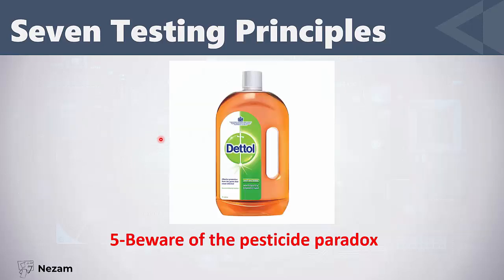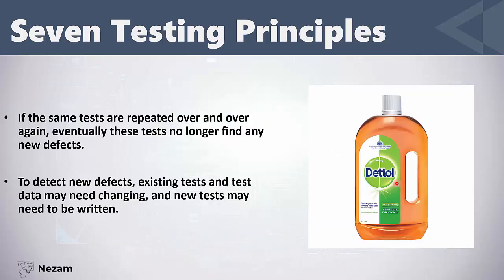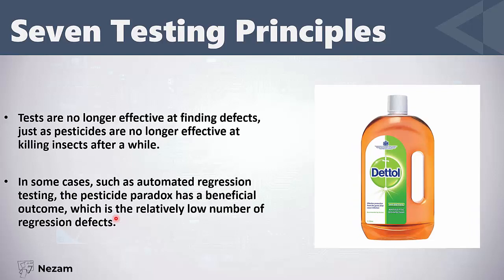Principle number five: beware of the pesticide paradox. Any pesticide used over and over again will become weaker and weaker at killing insects. The same applies to software testing — if the same tests are repeated over and over again, those tests will no longer be effective. They will not find any new defects. To detect new defects, you should change your test cases, test conditions, and test data.